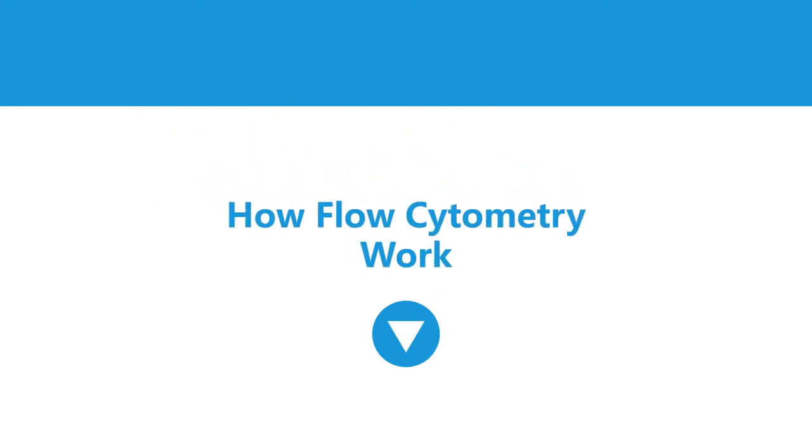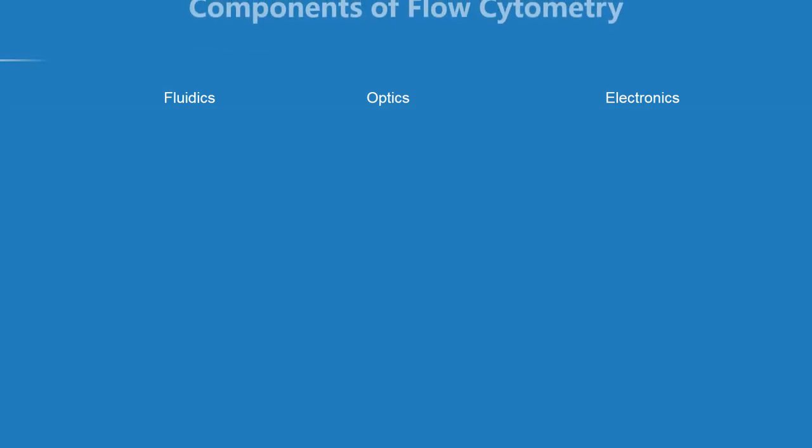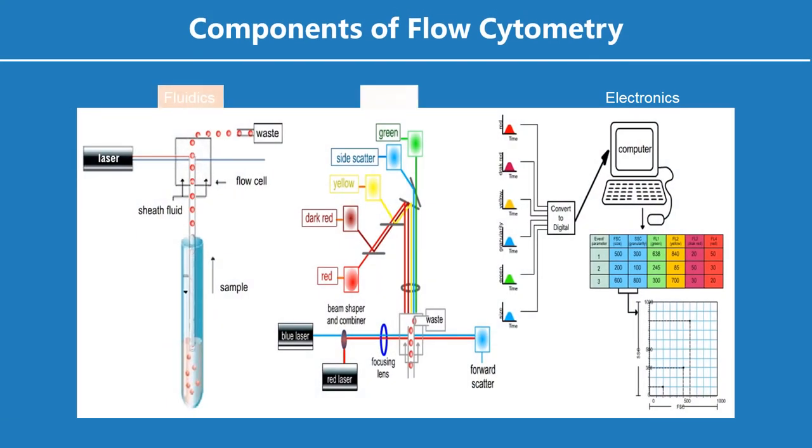How flow cytometry works. Three main systems make up the flow cytometer instrument: the fluidics, the optics, and the electronics.